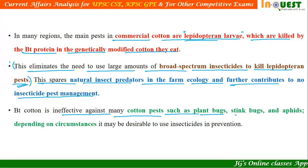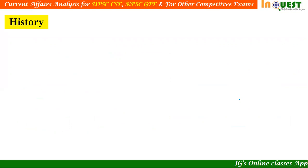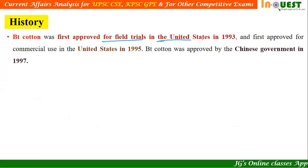Bt cotton is ineffective against many cotton pests such as plant bugs, stink bugs, and aphids. Depending on circumstances, it may be desirable to use insecticides for these pests which are not controlled by Bt cotton.